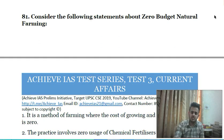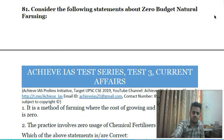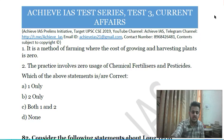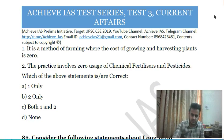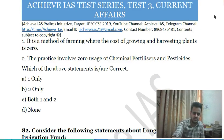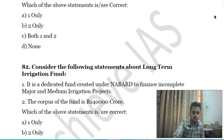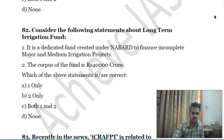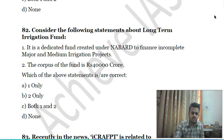Eightieth question: consider the following statements about Zero Budget Natural Farming — first, it is a method of farming where the cost of growing and harvesting plants is zero; second, the practice involves zero use of chemical fertilizers and pesticides. Choose the correct answer.